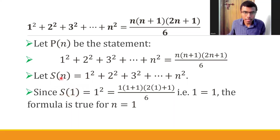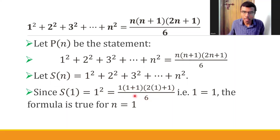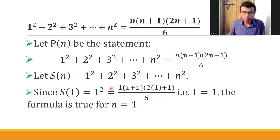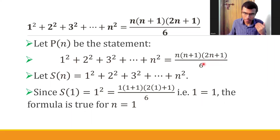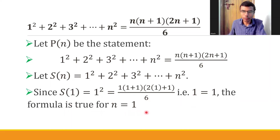Since S of 1 is nothing but 1². And if you put n = 1 on the right-hand side, you get 1 × 2 × 3 divided by 6, which equals 1. So LHS = RHS = 1. Therefore, the formula is true for n equal to 1.